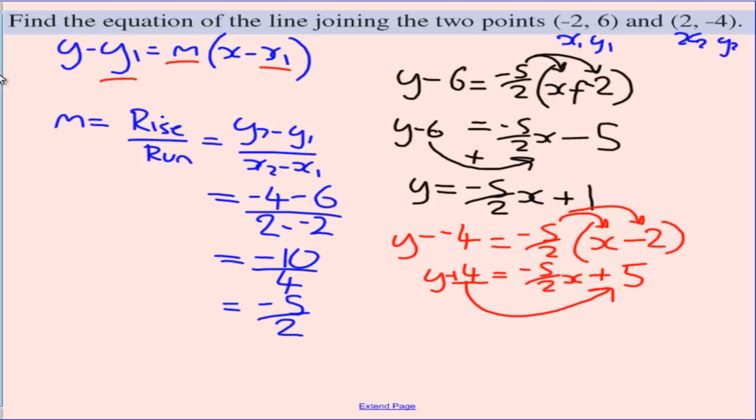Now, I need to move the plus 4 across by taking it away. So y equals negative 5 over 2x plus 1, which is the same as our answer here. So in this question, where it said find the equation of the line joining two points, you can be sure that those two points are on the line you're trying to find. So it shouldn't matter what of those two points you want to use.